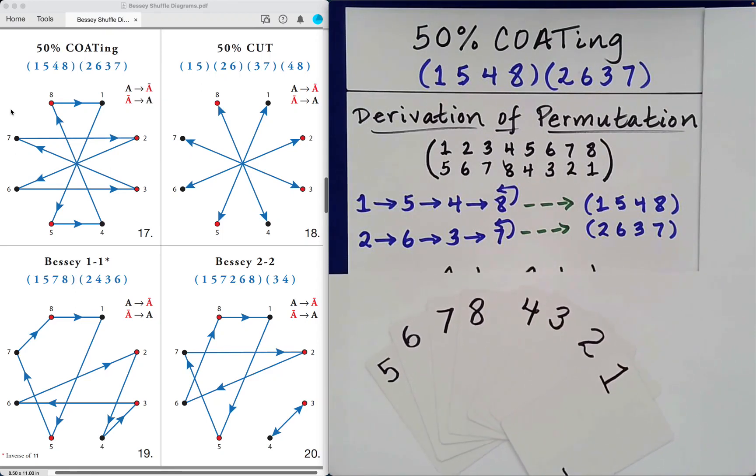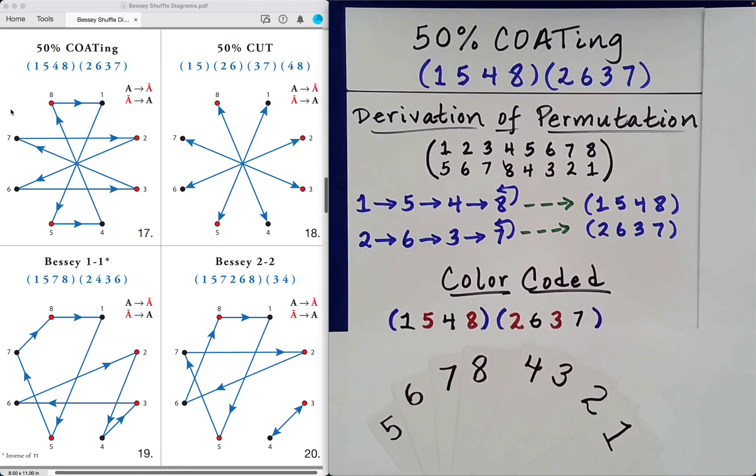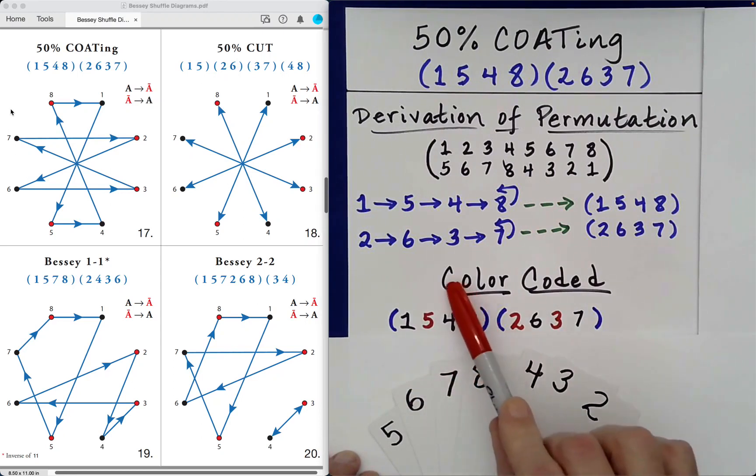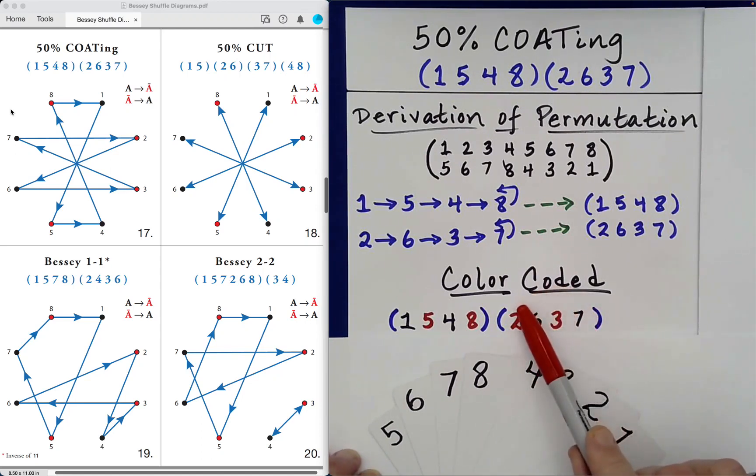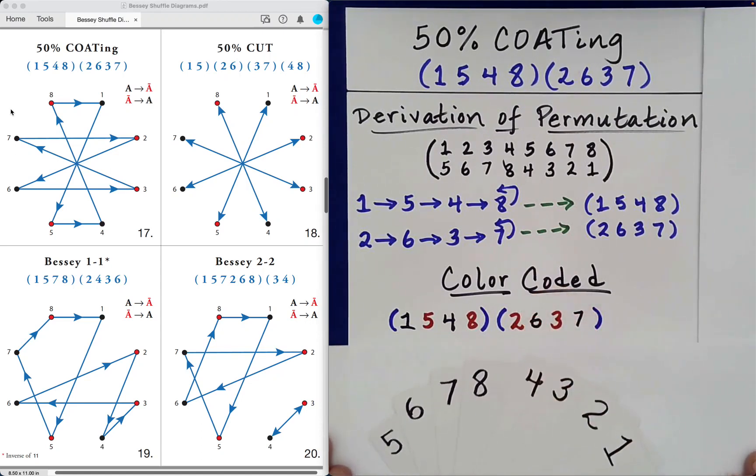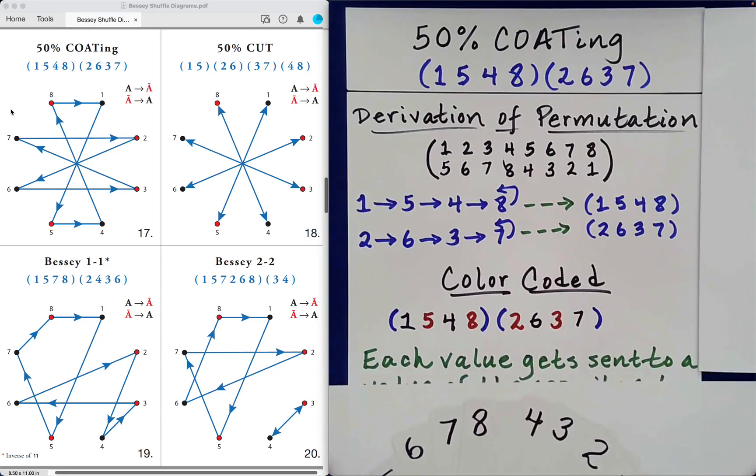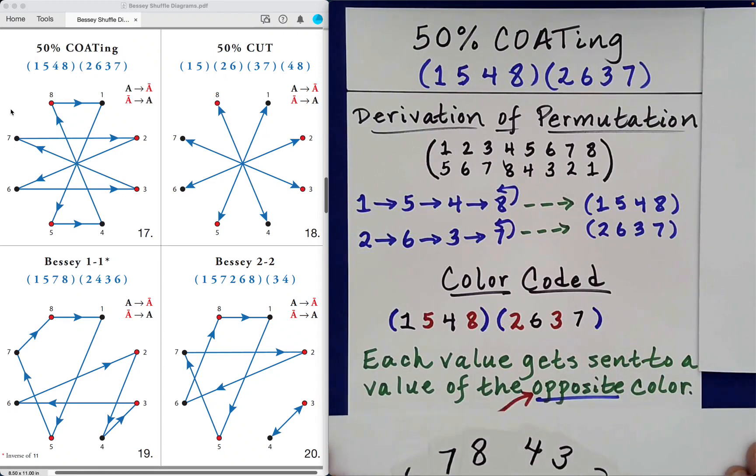If we color code this cycle notation of our permutation, we obtain the following. Black 1 goes to red 5, which goes to black 4, which goes to red 8, which wraps around and goes to black 1. Red 2 goes to black 6, which goes to red 3. So we see here that each value gets sent to a value of the opposite color. When that happens, inversion has occurred.